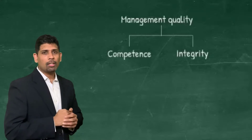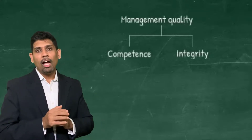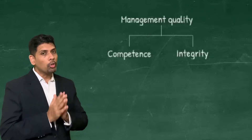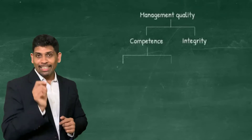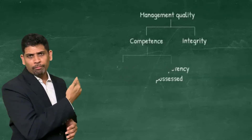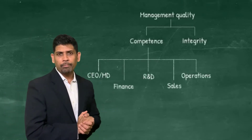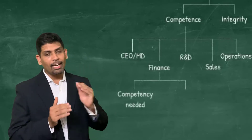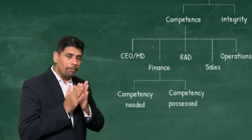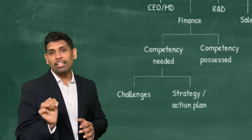Let's look at the competency factor. When looking at competency, rather than asking whether an individual is competent or not, I would look at whether the organization has the necessary competence it needs. I'll look at this in two parts: what are the competencies it needs, and what are the competencies it has? Break it by departments if need be — CEO's office, finance, marketing, R&D, strategy. How do I figure out what competencies they need? This can be figured out by looking at the challenges the company faces, or the action plan and strategy the company has.